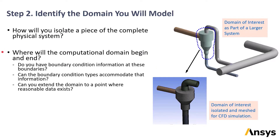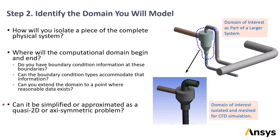Once you decide what piece of the system will be modeled, the boundaries of the computational domain must be selected. This selection is mainly determined by what information you have at the locations of the boundaries. Boundaries should be located where you know enough about the flow to provide the boundary conditions available in Fluent. Where there's uncertainty — for instance, about whether a single average value is a satisfactory approximation — it might be necessary to locate the boundaries further upstream. Also, always consider whether the problem can be simplified as a quasi-2D or axisymmetric problem, as the information will be just as valuable but take a fraction of the time.